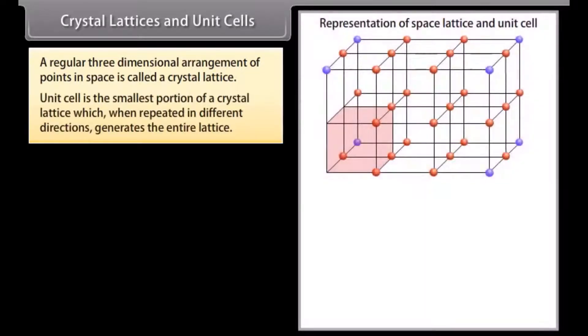Crystal lattices and unit cells. A regular three-dimensional arrangement of points in space is called a crystal lattice. Unit cell is the smallest portion of a crystal lattice which when repeated in different directions generates the entire lattice.